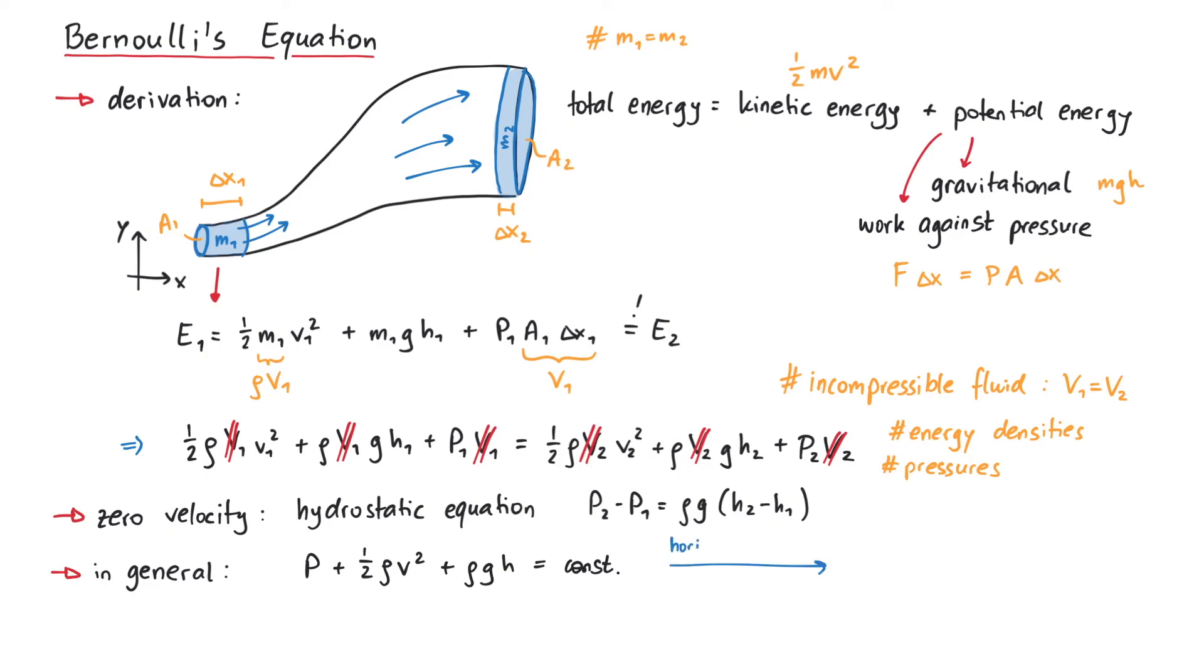And if we consider a horizontal pipe for simplicity, such that the gravitational potential energy is the same anyway, we reach Bernoulli's principle. If you increase the pressure, the velocity must go down. And if you reduce the pressure, the velocity goes up.